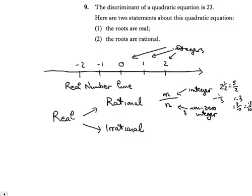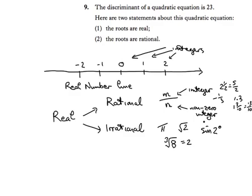We cannot divide by 0 — that's the first commandment of mathematics: thou shalt not divide by 0. So rational numbers are one integer divided by a non-zero integer. Irrationals are everything else — things that are not rational. So we have things like pi, the square root of 2, the sine of 2 degrees. The cube root of 8 is actually 2, which is rational, so that's not a good example. The cube root of 9 would be irrational — it can't be written as a rational number.